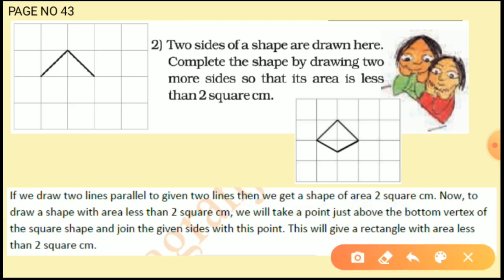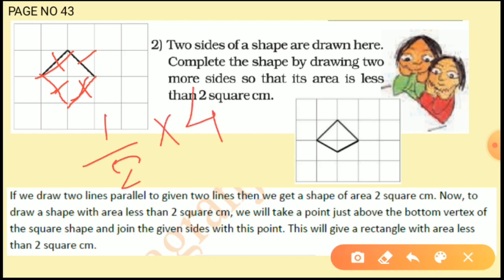Let's understand. If we draw the lines parallel to these two given lines — one parallel to this and one parallel to this one — then the area would be 4 times half, that is 1 half multiplied by 4, which equals 2. So if we draw parallel lines, the area of this shape will be 2 square cm.